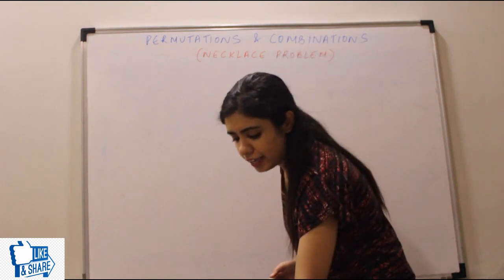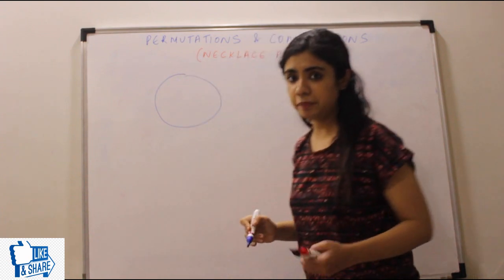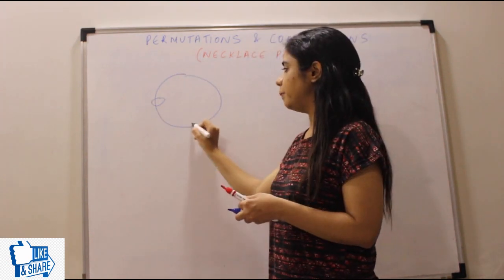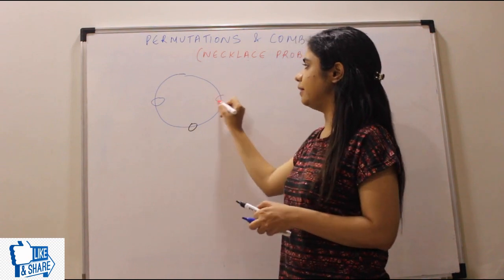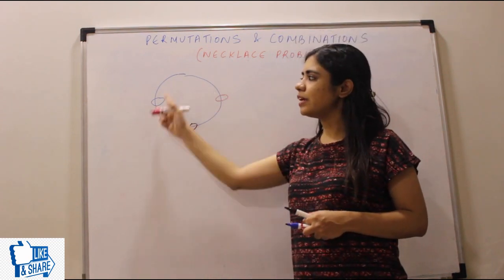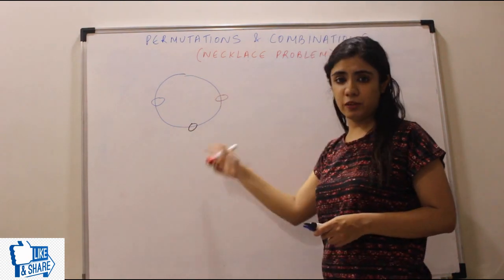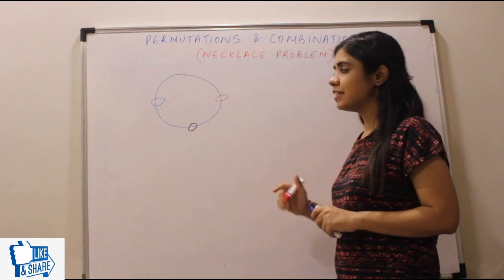Let's say I have a necklace which has three beads. Bead one, bead two, and bead three. My question to you is in how many ways can I arrange the three beads? Now understand because it's a circular arrangement.